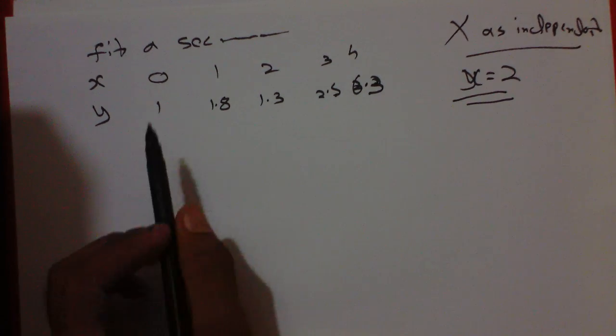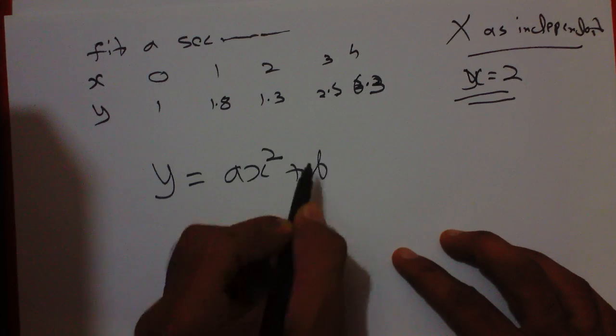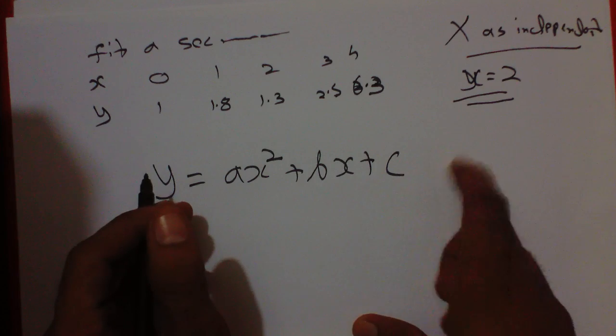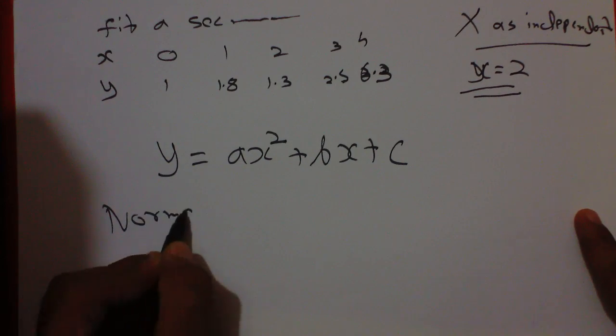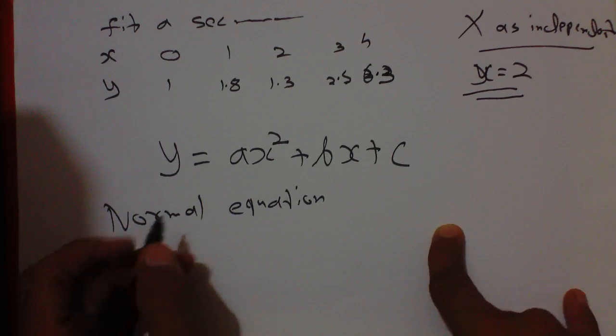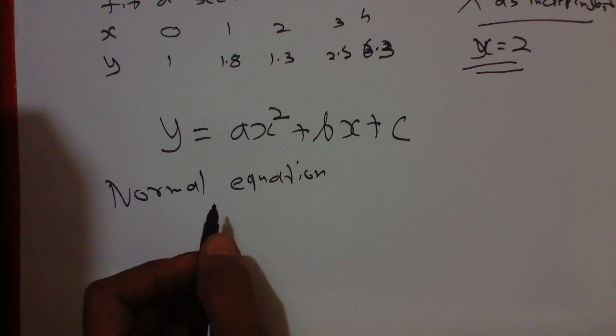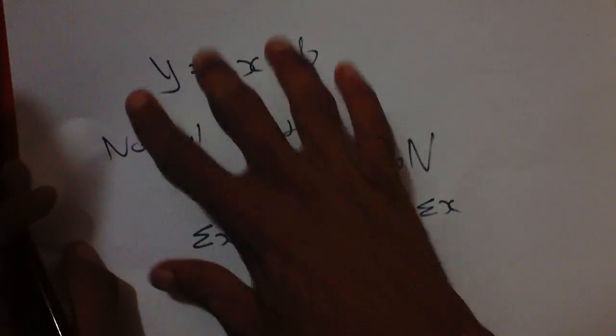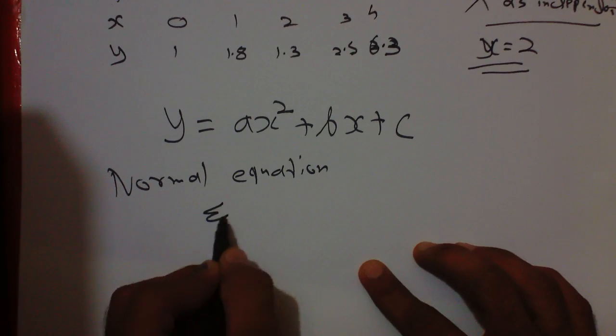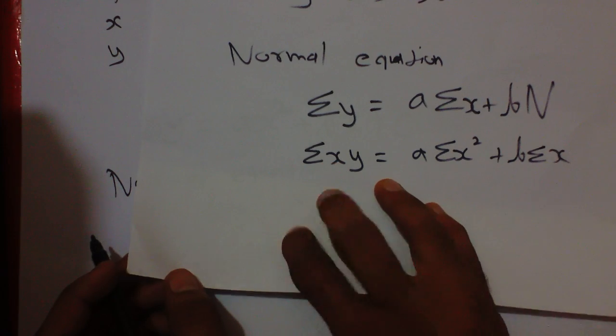We know that the equation of a straight line was y equals ax plus b. So here the equation is y equals ax² plus bx plus c. We just added one more variable. The normal equations for this type of question - there are three normal equations. In that example of straight line we saw two. Here we have three: summation of y, summation of xy, and summation of x²y.